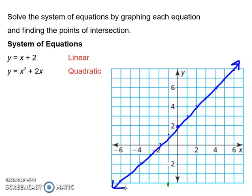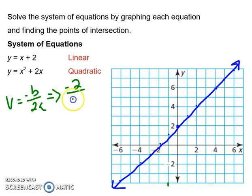Now we've graphed the linear equation and we have to graph the quadratic equation. To graph a quadratic, we need the vertex. The vertex x-coordinate is equal to negative B over 2A. When we plug in the values, our B value is two, so it's negative two over two times one, which gives negative one. That's the x-value and the axis of symmetry. Now we plug in negative one: negative one squared is one, plus two times negative one is negative two, so we get negative one. So the vertex is negative one, negative one.